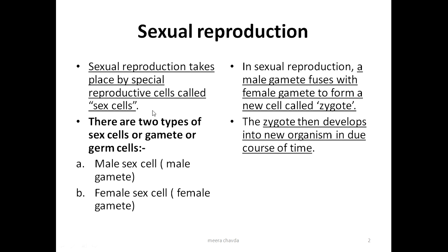Sexual reproduction takes place by special reproductive cells called sex cells, also known as gametes. There are two types of gametes: male gamete and female gamete. In sexual reproduction, the male gamete fuses with the female gamete to form the zygote, which gives rise to a new organism.